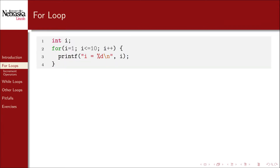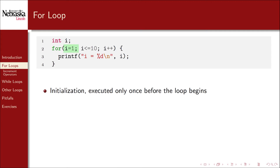Here's a simple example that performs the basic loop from the previous part: it counts from 1 to 10 and prints out each value on its own line. Here's the initialization statement — it's executed only once before the loop begins. In this case, it initializes the variable i to 1.